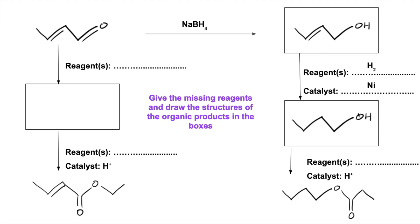And then to turn that into an ester, we need to react the alcohol with the carboxylic acid. So we're going to need one, two, three — so that's propanoic acid. Obviously in the presence of that acid catalyst, that would give that ester.